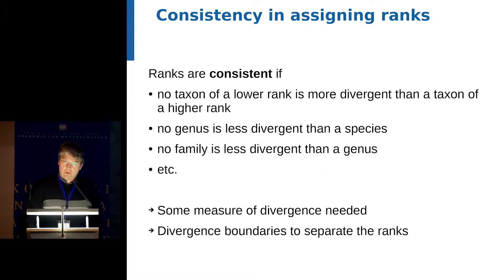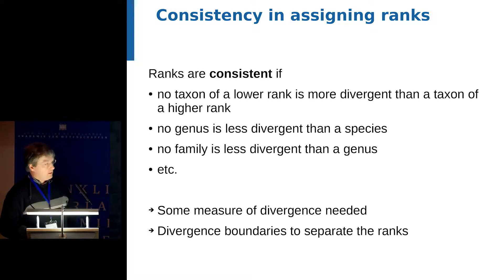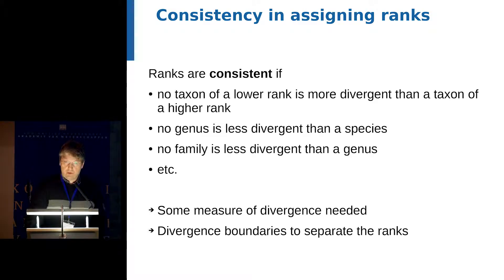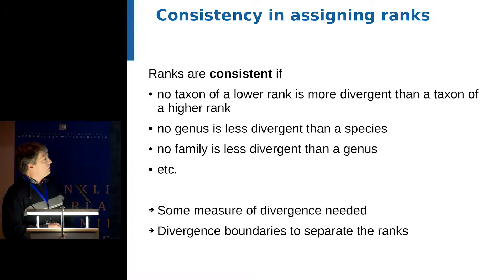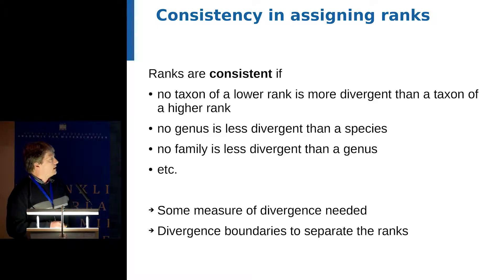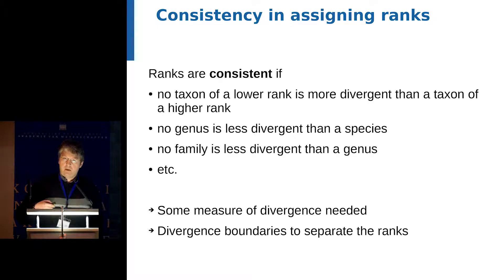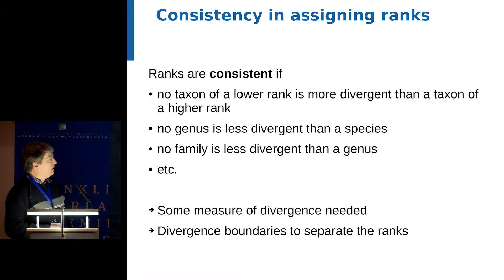I would like to introduce a very simple concept of consistency in assigning ranks. It quite simply means that no taxon of a lower rank should be more divergent than a taxon of a higher rank. For instance, no genus should be less divergent than a species, no family should be less divergent than a genus. This can be phrased rather generally, even if it's not yet known which measure of divergence should be used.